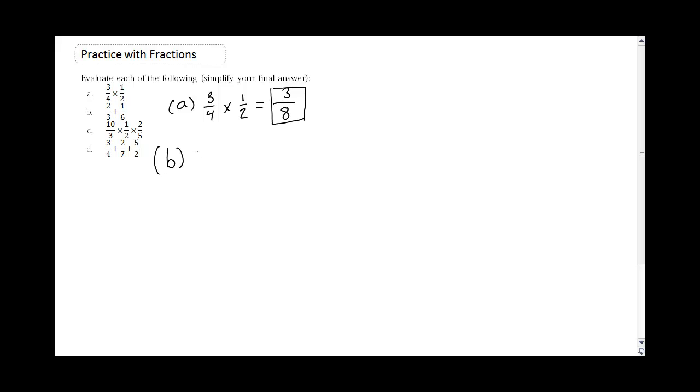B here is 2 thirds plus 1 sixth. Now addition is actually harder. Remember when you do addition, you have to have a common denominator.